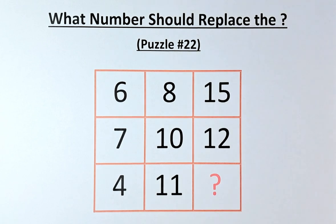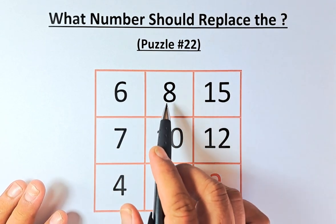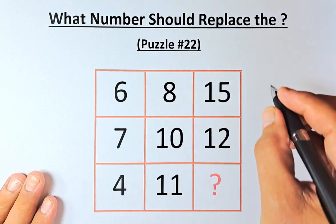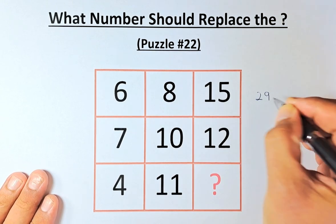So if you look at the row: 6, 8, and 15. When you add them up together, 6 plus 8 is 14, 14 plus 15, the total is going to be 29.